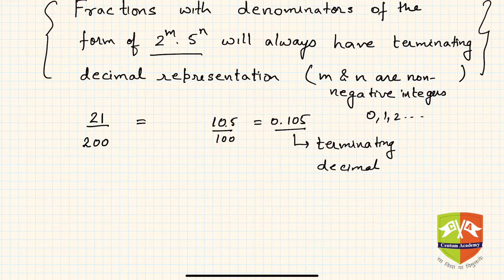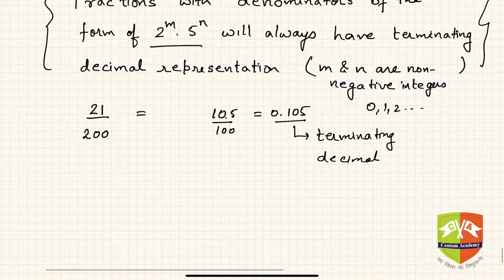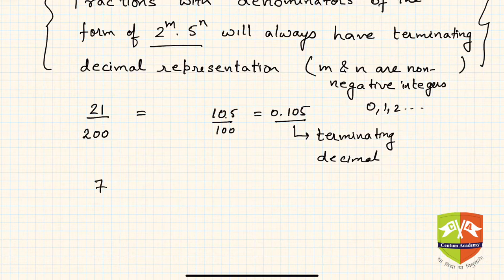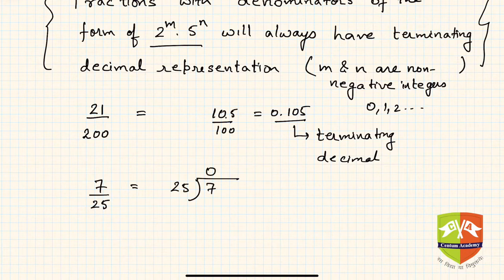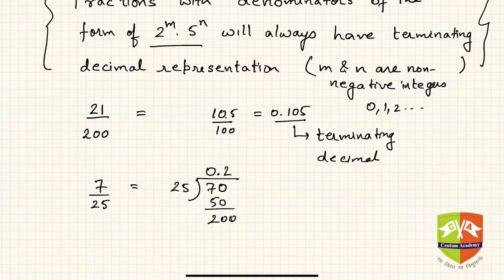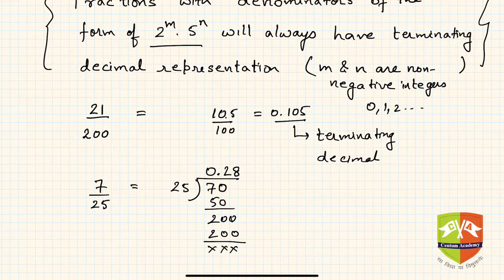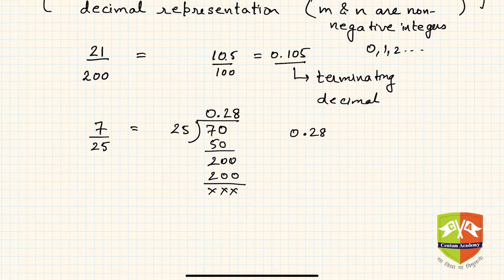Let's take another example: 7 upon 25. Doing the long division — 25 goes into 70 twice (50), remainder 20; bring down a zero to get 200, and 25 times 8 is 200. So 7 upon 25 equals 0.28, which is again a terminating decimal.